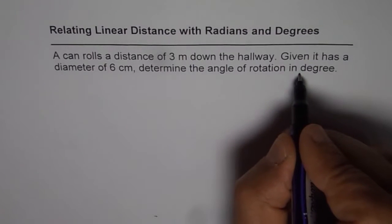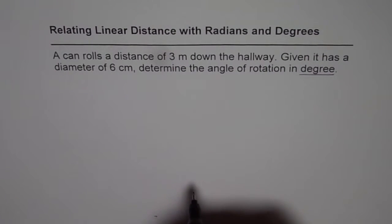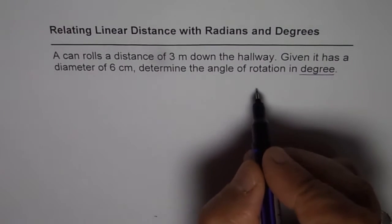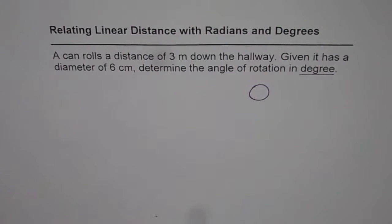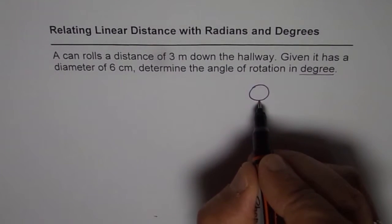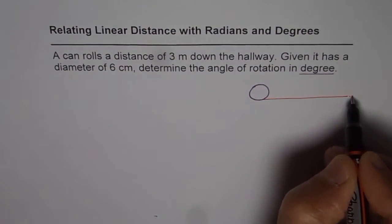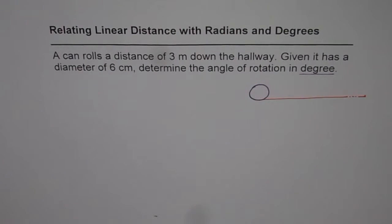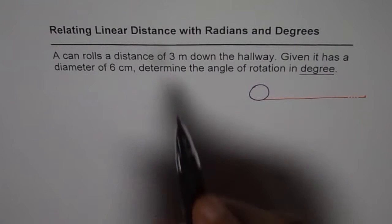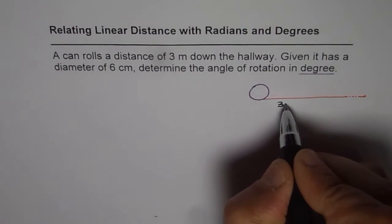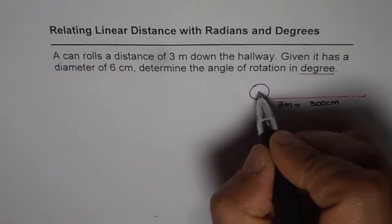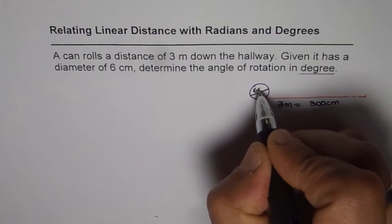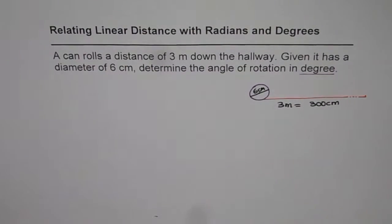Note that you have to write the answer in degrees. Since the units for diameter are centimeters, it is good practice to convert the units. So 3 meters becomes 300 centimeters. The diameter given is 6 centimeters, so we now have the same units.